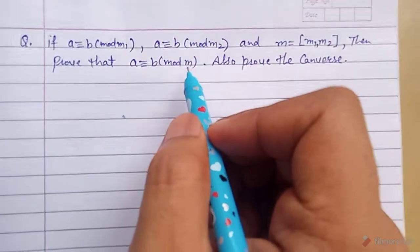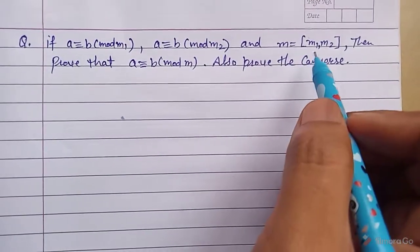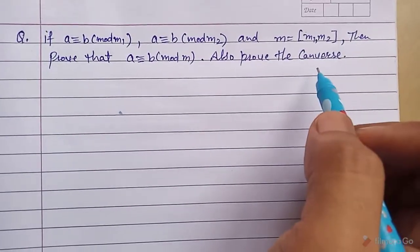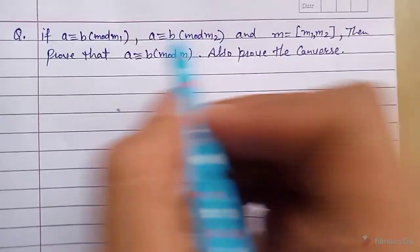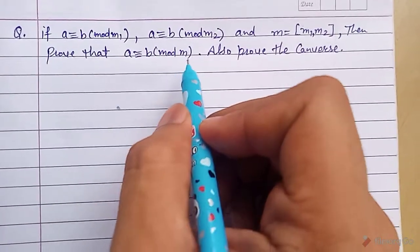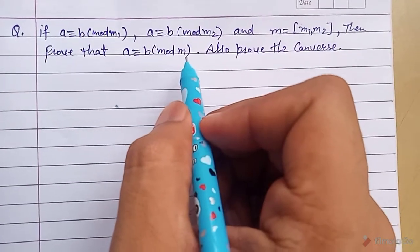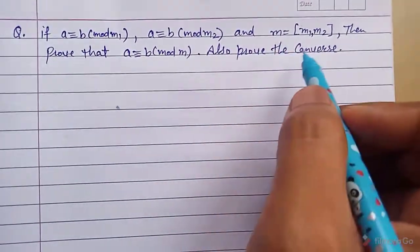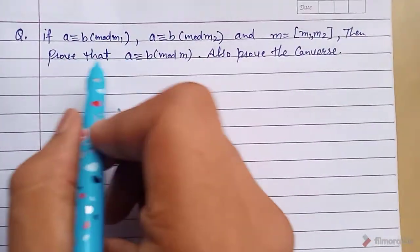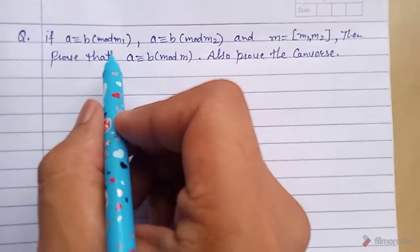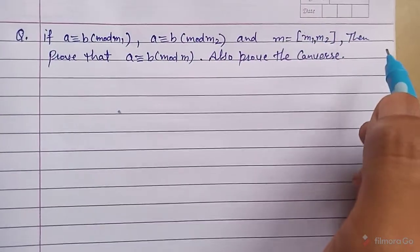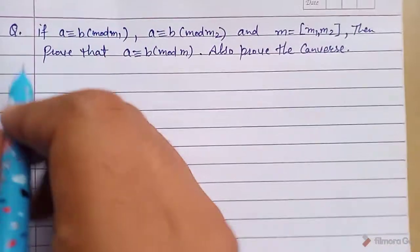We will also prove the converse. The converse means: if a ≡ b (mod m) exists, where m is the LCM of m1 and m2, then we can write a ≡ b (mod m1) and a ≡ b (mod m2).